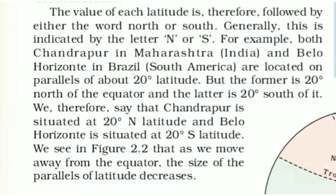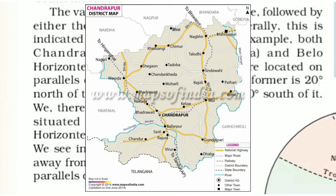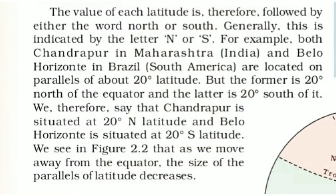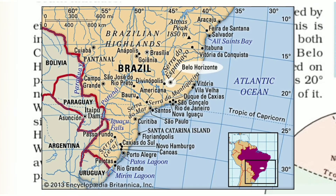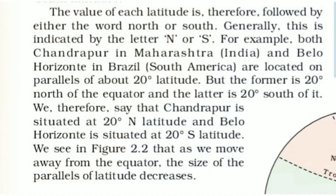Chandrapur in Maharashtra, India, and Belo Horizonte in Brazil, South America — where are these two places located? Both are located on the parallel of about 20 degree latitude.